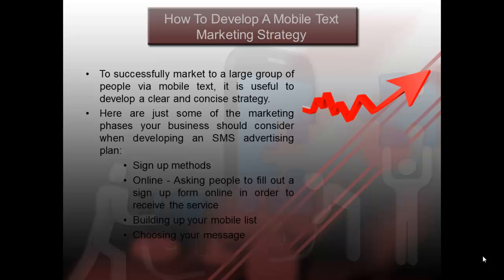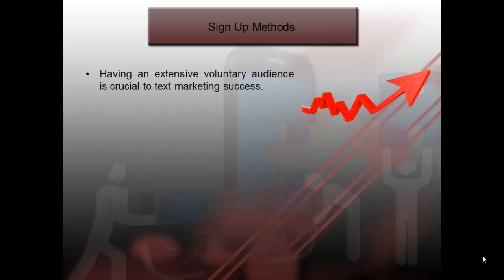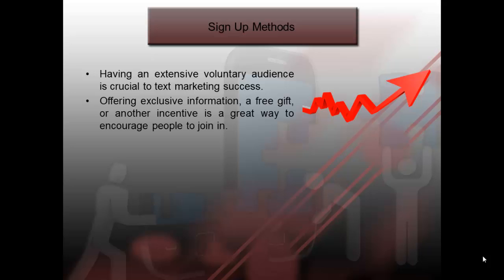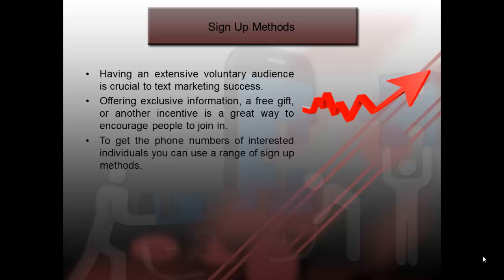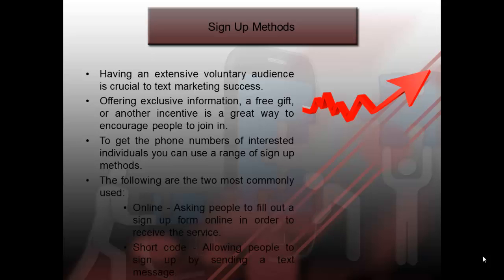Having an extensive, voluntary audience is crucial to text marketing success. Offering exclusive information, a free gift, or another incentive is a great way to encourage people to join in. To get the phone numbers of interested individuals, you can use a range of sign-up methods. The two most commonly used are: online — asking people to fill out a sign-up form online in order to receive the service — and short codes, allowing people to sign up by sending a text message.